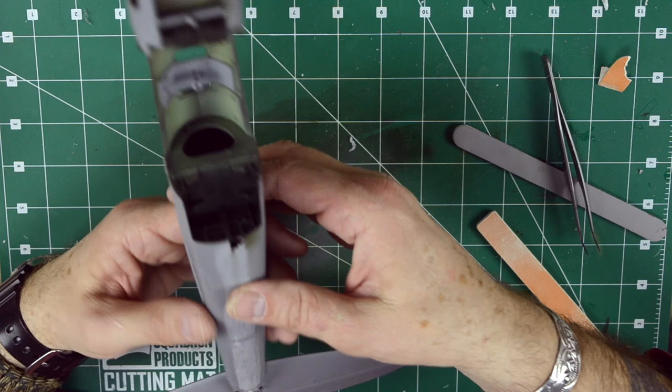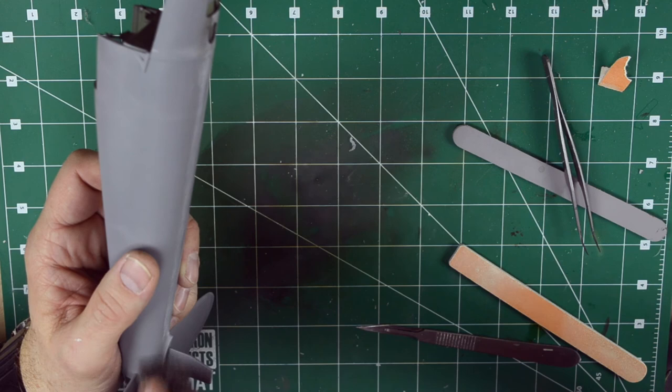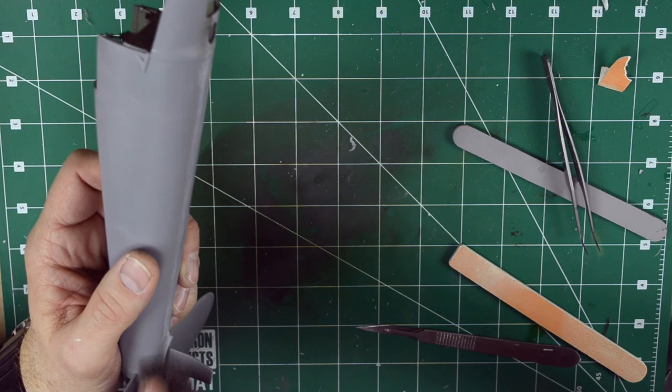And there you have it, tailplane in place. Everything lined up. Now it starts to look like a mosquito. Okay guys, that was it for now. Next time when we come back we'll tackle the engines. Jeff V here signing off.